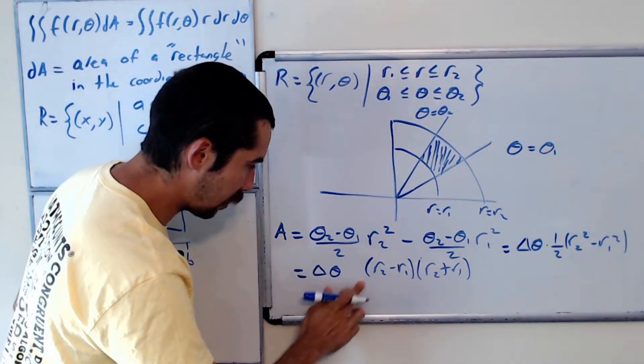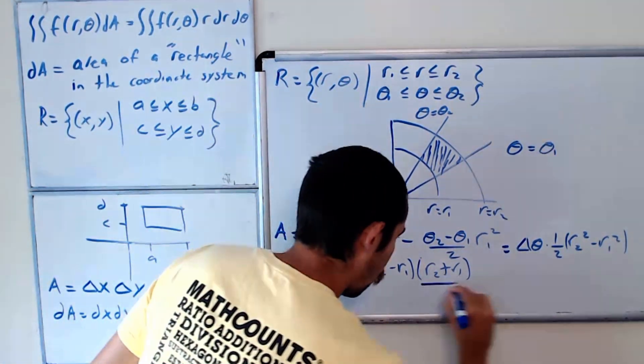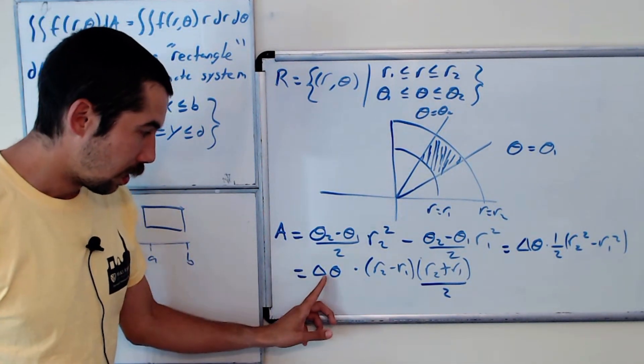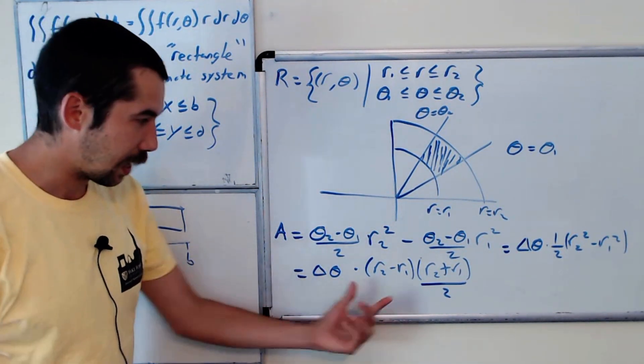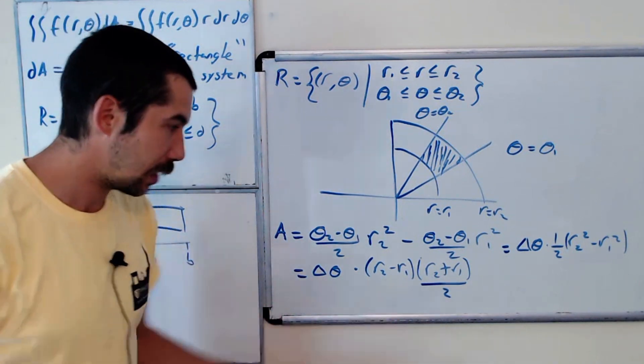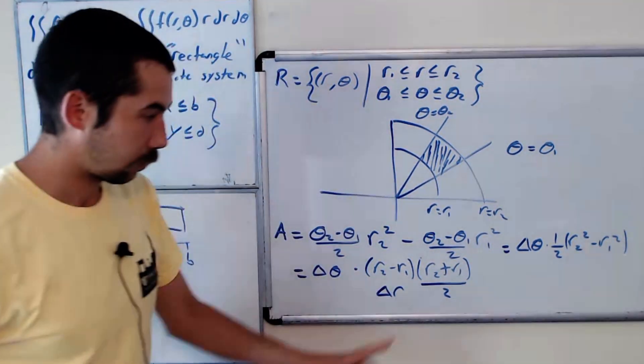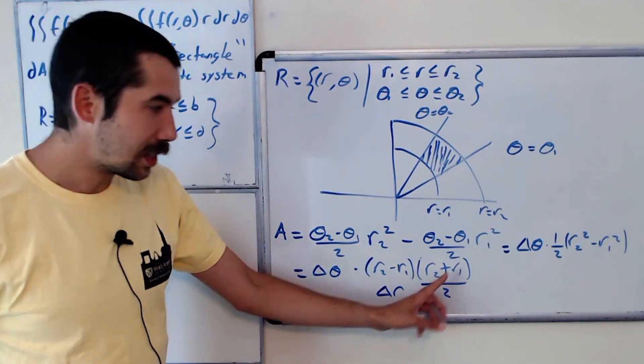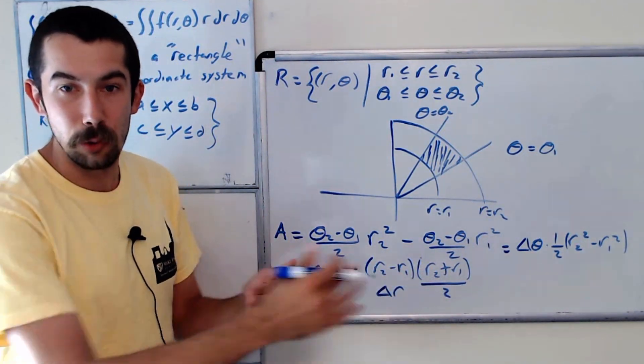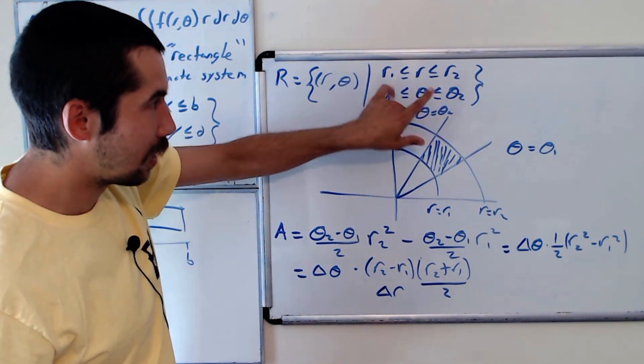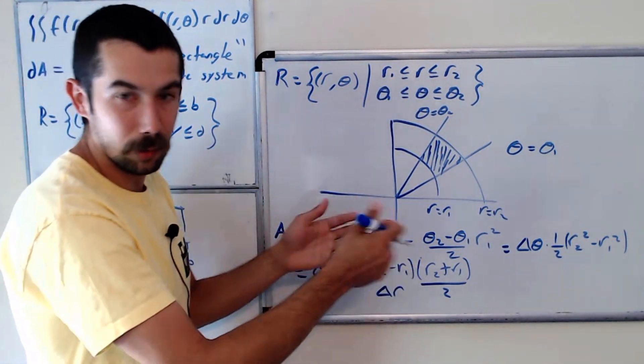And what we're going to do is let's move this 1/2 over here. And why are we doing this? Well, delta theta, that stays the same. r2 minus r1, that's also delta, that's delta r. And what is this? This is like the average of the two radius bounds. But what we're going to be doing is we're going to be taking the limit as r1 approaches r2, or maybe they approach somewhere in the middle. Basically, we want to take the limit as delta r goes to 0.